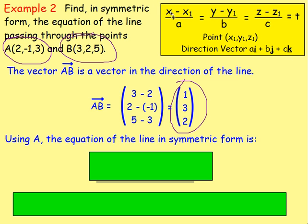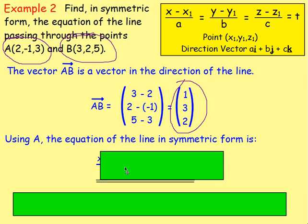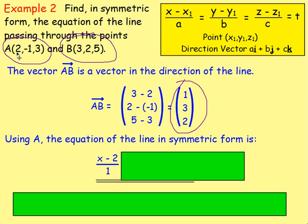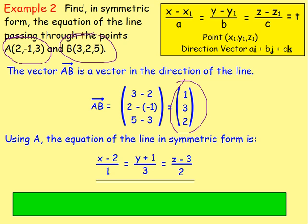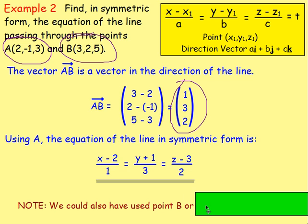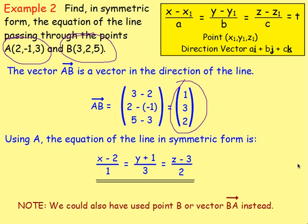The equation of the line in symmetric form, using point A (2, −1, 3) and direction vector (1, 3, 2), is: (X − 2)/1 = (Y + 1)/3 = (Z − 3)/2. We could also have used point B instead of A, and we could have used vector BA instead of AB — either way, it is still the equation of the same line. That is the equation of the line in symmetric form.